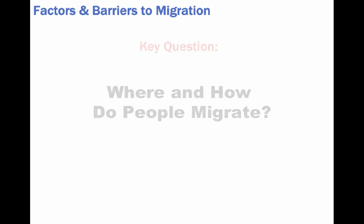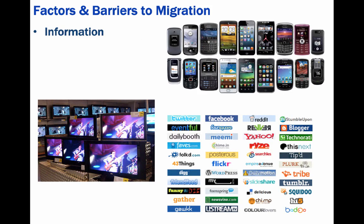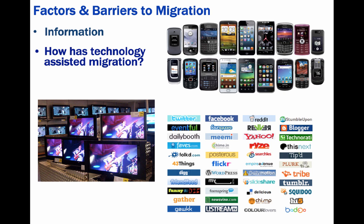We can move on to looking at factors and barriers to migration. One of the causes can be the knowledge of opportunities in other places, which you get through information. Due to modern technology, this can be passed almost instantaneously. Keep in mind, a cause or a factor of migration can be the same thing as a barrier to migration — you just have to look at it in the opposite way.